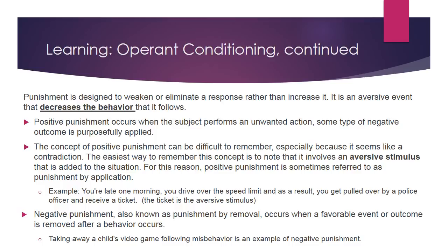Negative punishment, also known as punishment by removal, occurs when a favorable event or outcome is removed after a behavior occurs. For example, your child misbehaves and you take away their video game as punishment. These concepts of operant conditioning give you the ability to impact another's behavior depending on the rewards and punishments provided depending on the scenario.